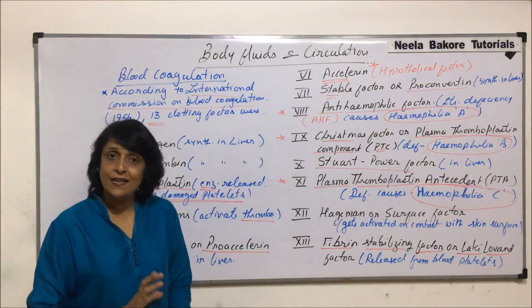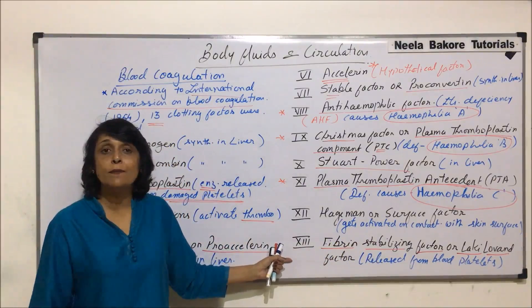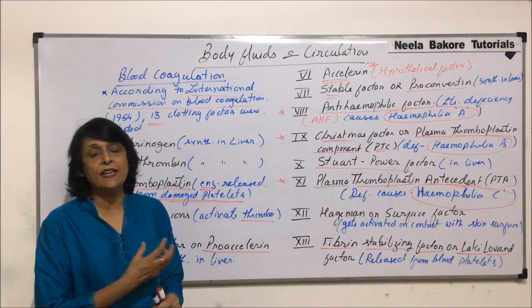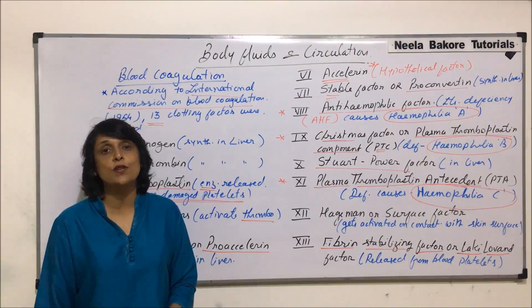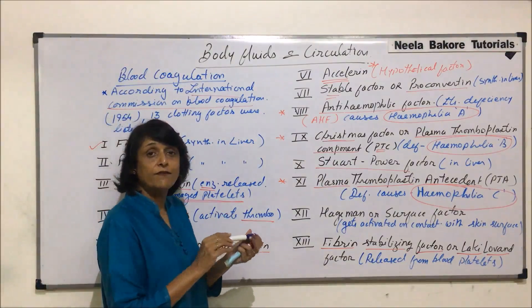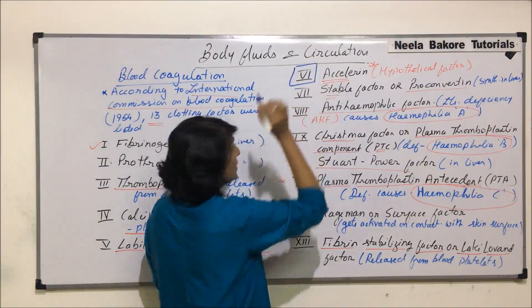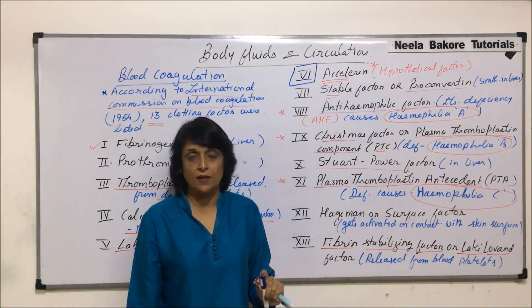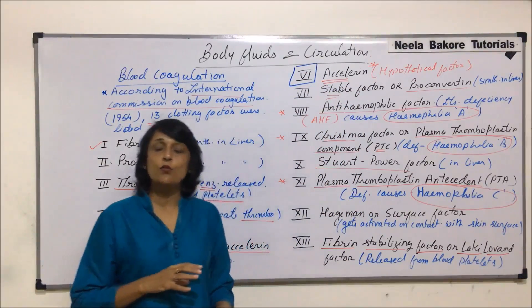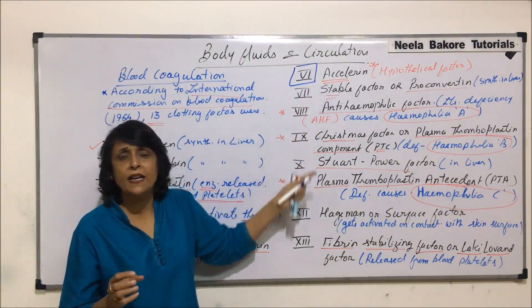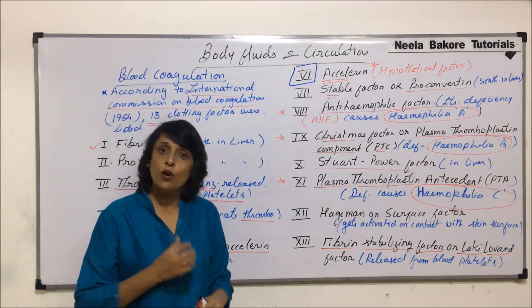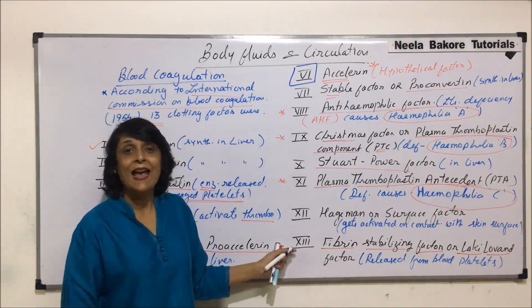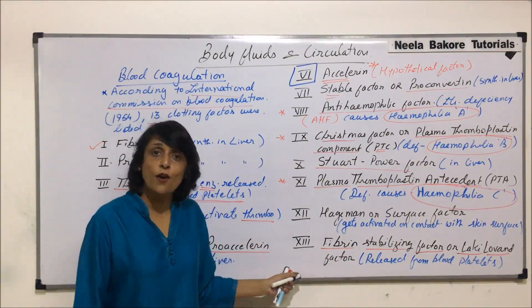Now we know all 13 factors, all given Roman numerals. In some textbooks, only 12 factors are associated with blood clotting. The factor not counted is factor VI, accelerin. One group of scientists believes it is a hypothetical factor that has not been isolated. Another group thinks it exists but works with another factor rather than independently. This reduces the list from 13 to 12.